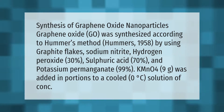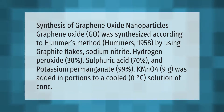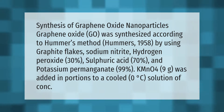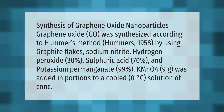Synthesis of graphene oxide nanoparticles: graphene oxide (GO) was synthesized according to Hummer's method (Hummers, 1958) by using graphite flakes, sodium nitrite, hydrogen peroxide 30%, sulfuric acid 70%, and potassium permanganate 99%. Potassium permanganate, 9 grams, was added in portions.